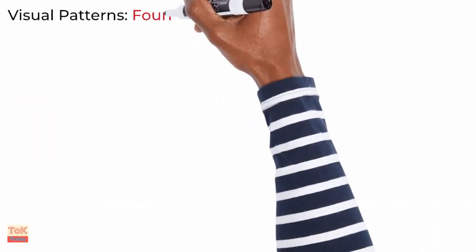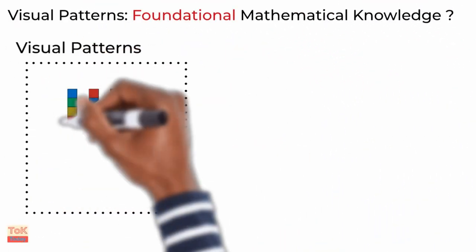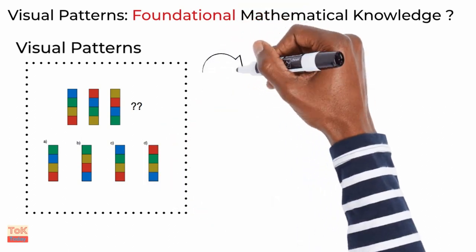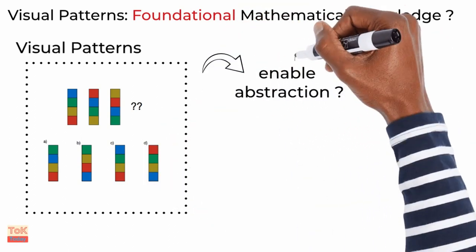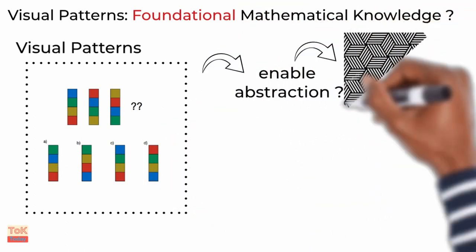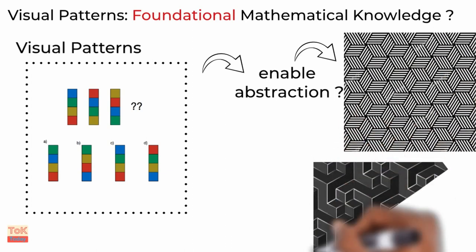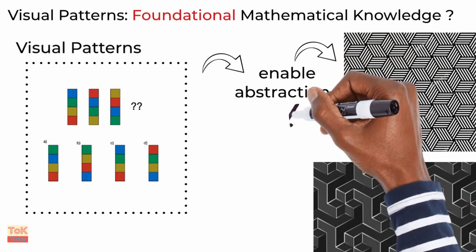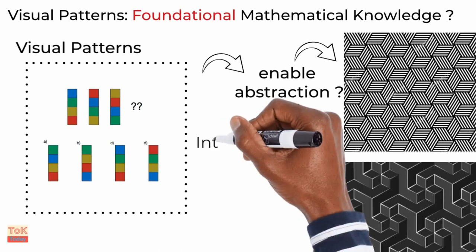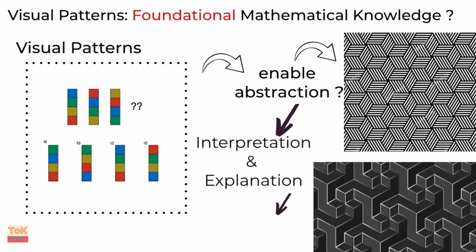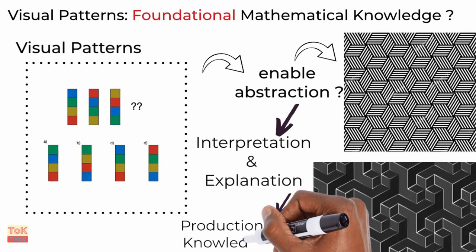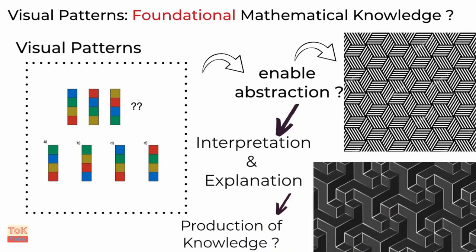If you develop that discussion around the role of visual patterns, you'll come across research on the capacity of patterns to enable abstraction from data sets. Obviously, you could bring in the TOK concepts of interpretation and explanation into this discussion. Further, this could be usefully developed to link together the communication of knowledge with the production of knowledge.